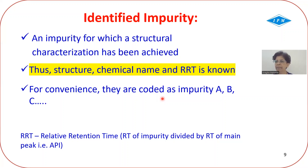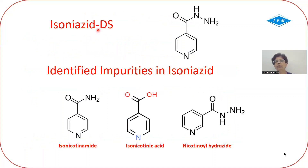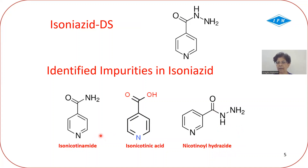The reason for coding is that instead of writing a long chemical name in the chromatogram or specification, it is recommended to assign codes to impurities, with the detailed chemical name available in the procedure. For example, isoniazid, which is an anti-tubercular drug, has identified impurities: isonicotinamide, isonicotinic acid, and nicotinoid hydrazide. These are structurally different from isoniazid, and because their structures are known, they are identified impurities.